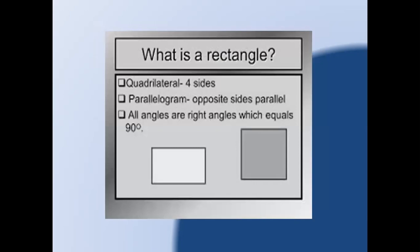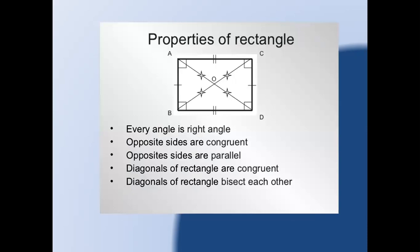Now we have rectangle. What is a rectangle? It is a parallelogram — a four-sided polygon — because opposite sides are parallel, and all the angles are right angles, meaning all angles are 90 degrees. The properties of a rectangle are: every angle is a right angle, opposite sides are congruent, opposite sides are parallel to each other, diagonals of a rectangle are congruent, and diagonals of a rectangle bisect each other.